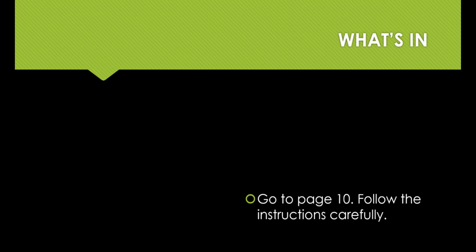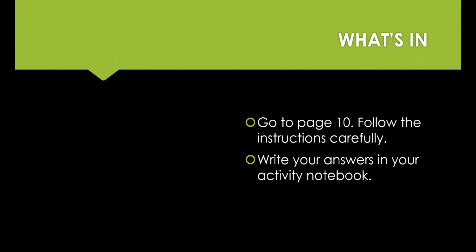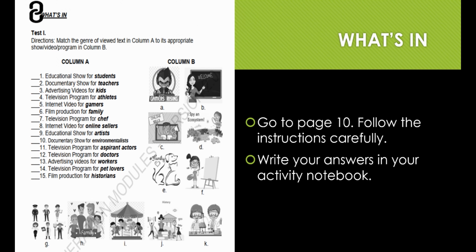This time, let's answer together what's in on page 10. Do you still remember the different kinds of genres you studied in lesson 2? Match the genre of viewed text in column A to its appropriate show, video, or program in column B. Write the letter of your answers in your activity notebook. For example, in number 1: educational shows for students — the answer is letter K.